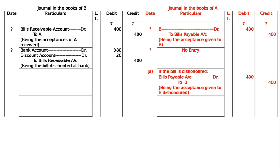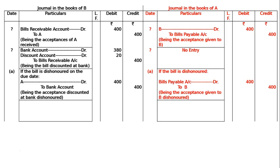In the books of B, if the bill is dishonored on the due date: A is debited to Bank, being the acceptance discounted at bank and dishonored.